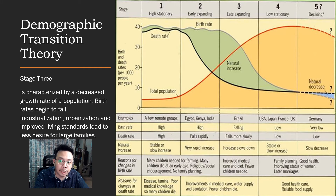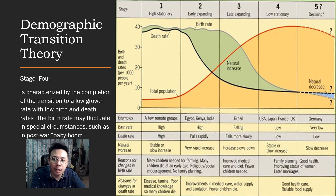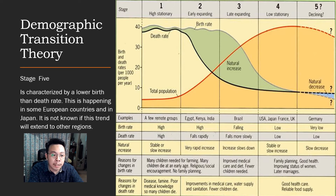Stage 3 is characterized by a decreased growth rate — birth rates begin to fall while death rates have fallen dramatically. Industrialization, urbanization, and improved living standards lead to less desire for large families. Stage 4 is characterized by the completion of the transition to a low growth rate with low birth and death rates; the birth rate may fluctuate in special circumstances such as a post-war baby boom. Stage 5 is characterized by a lower birth rate than death rate, happening in some European countries and Japan, though it is not known if this trend will extend to other regions.